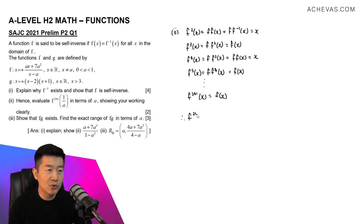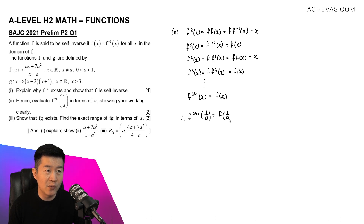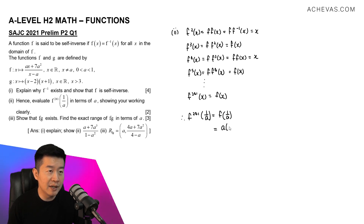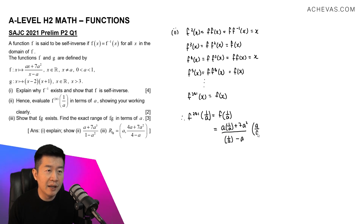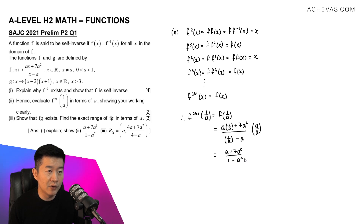So f^241(1/a) = f(1/a). Replacing all x by 1/a in the expression for f: we get a times (1/a) plus 7a squared, divided by (1/a) minus a. Multiplying numerator and denominator by a gives: (a + 7a³) divided by (1 − a²).